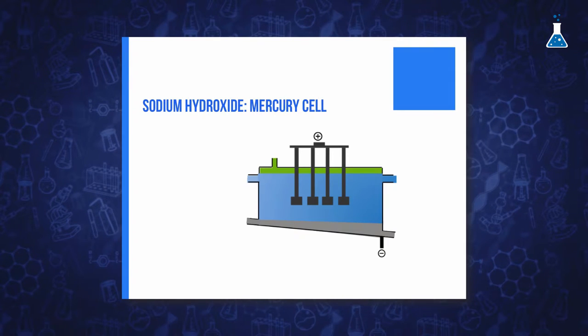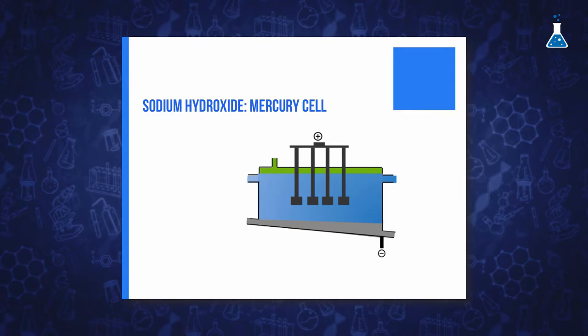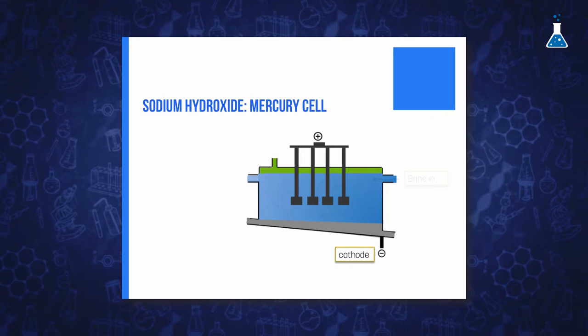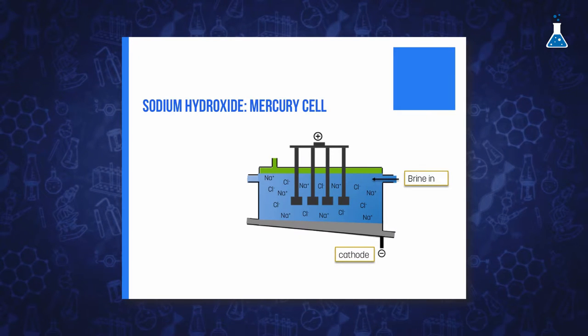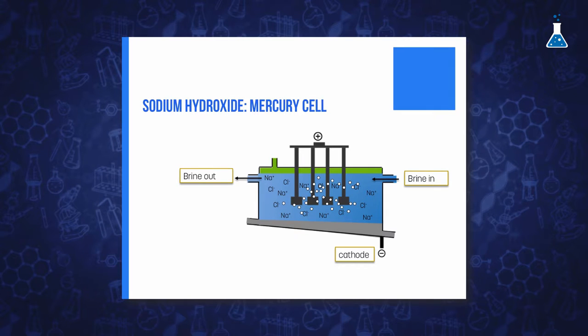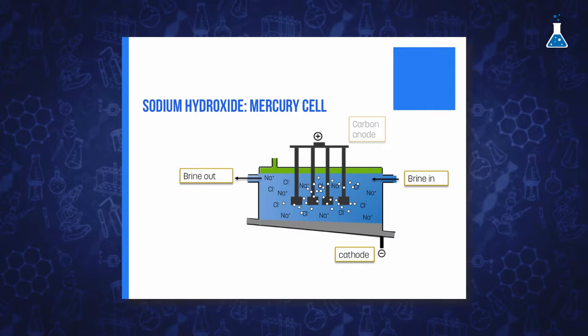The last type of cell is the mercury cell, which uses mercury as a cathode. In these cells, brine flows through the cell and, as in the previous process, the chloride ion is oxidized to chlorine at the anode, but at the cathode, sodium is discharged at mercury.